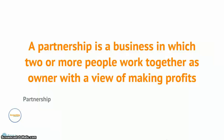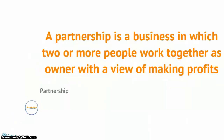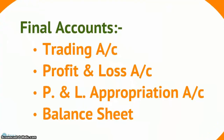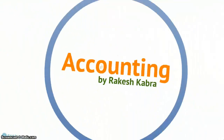Now let's see what the final accounts of a partnership firm consist of. Final accounts of a partnership firm consist of: trading account, profit and loss account, profit and loss appropriation account, and the balance sheet. So let's take an example to understand how to prepare a profit and loss appropriation account.